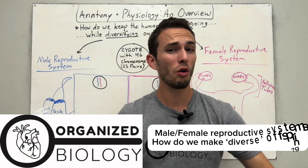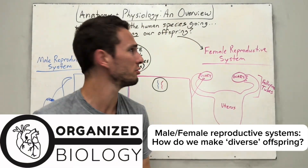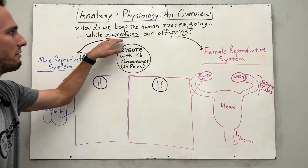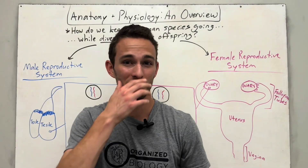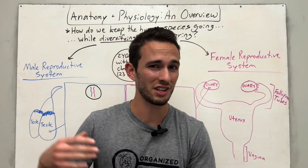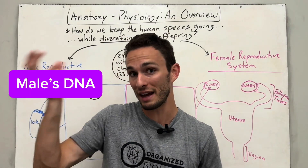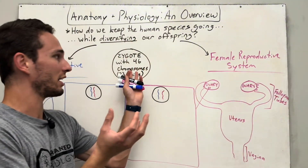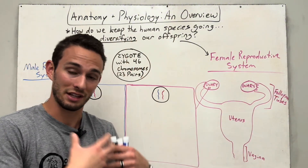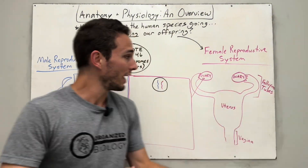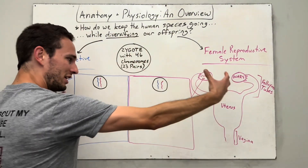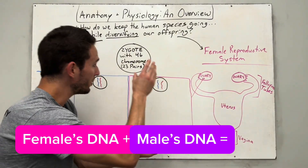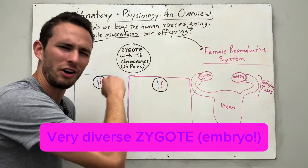Male and female reproductive systems. The whole goal is to produce offspring, but not only that — we want to produce diverse offspring. That's the reason we actually reproduce sexually, because we're combining male and female DNA into a zygote, otherwise known as an embryo or developing baby, and by doing so, by combining two separate people's DNA, we make a very diverse zygote.